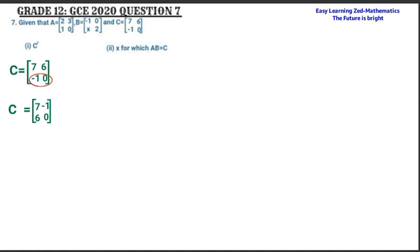In other words, what we need to do is just interchange the positions of negative 1 and 6. As you can see, those are the only elements that have changed position. The 6 which was on top has come down into the position of negative 1, and negative 1 has gone into the position of 6. So that is the transpose of matrix C.